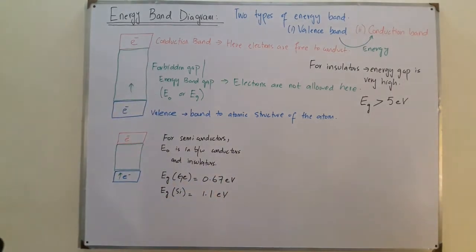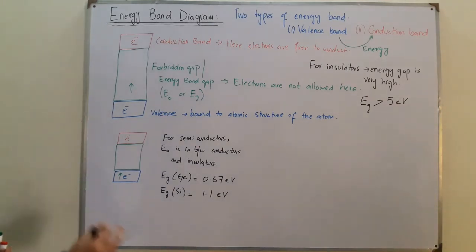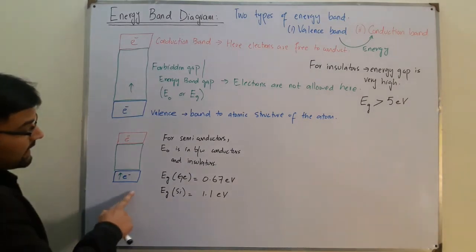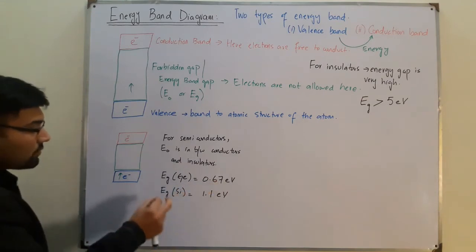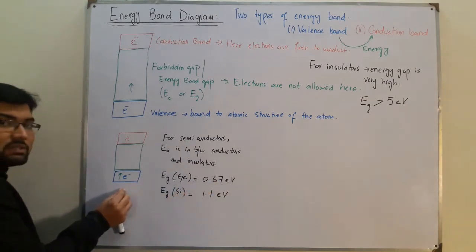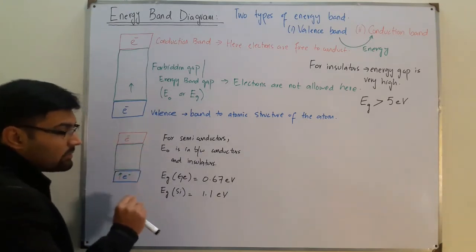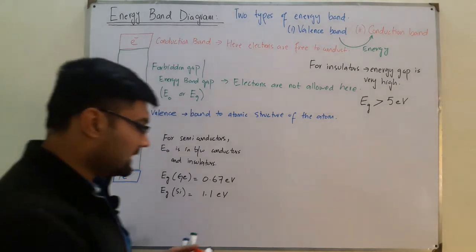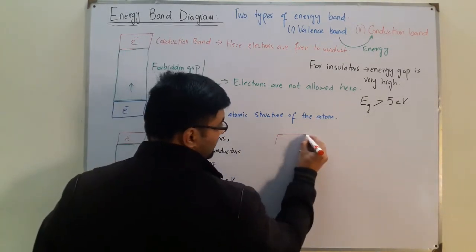This means that for a germanium atom, if you give a valence electron energy equal to 0.67 electron volts, that electron will move from the valence band into the conduction band and become free for conduction.